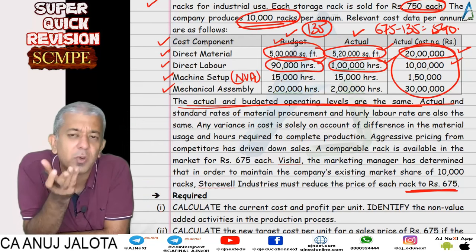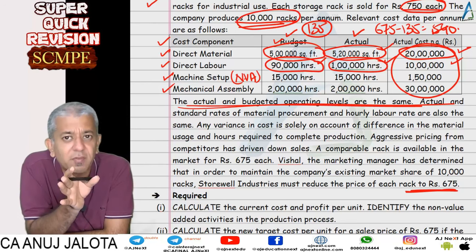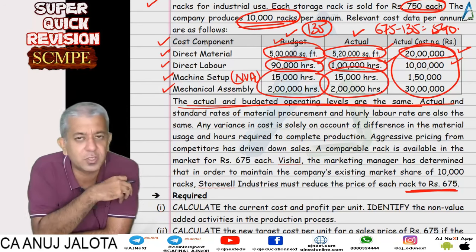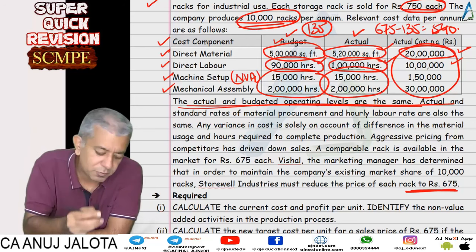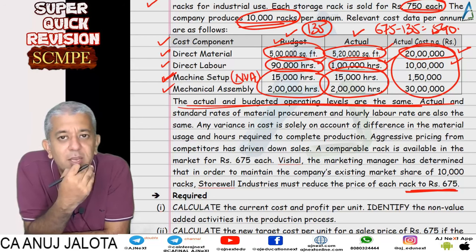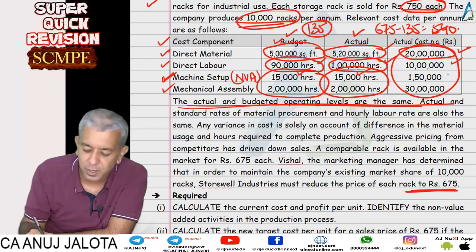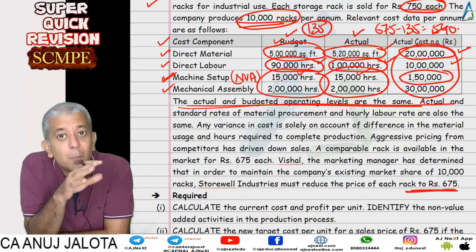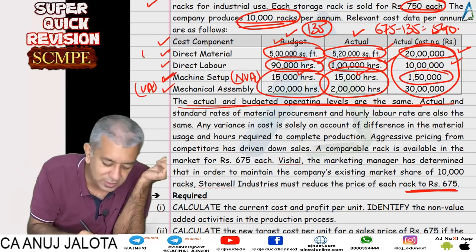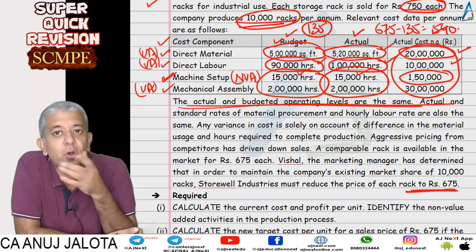These ideas fail when we come to machine setup and mechanical assembly, because both activities were performed efficiently. For machine setup — being a non-value-added activity, the customer doesn't value it — you can explore whether reducing setup hours is possible to bring costs down. However, mechanical assembly is a value-added activity: you are assembling the product, it is manufacturing, and it adds value.